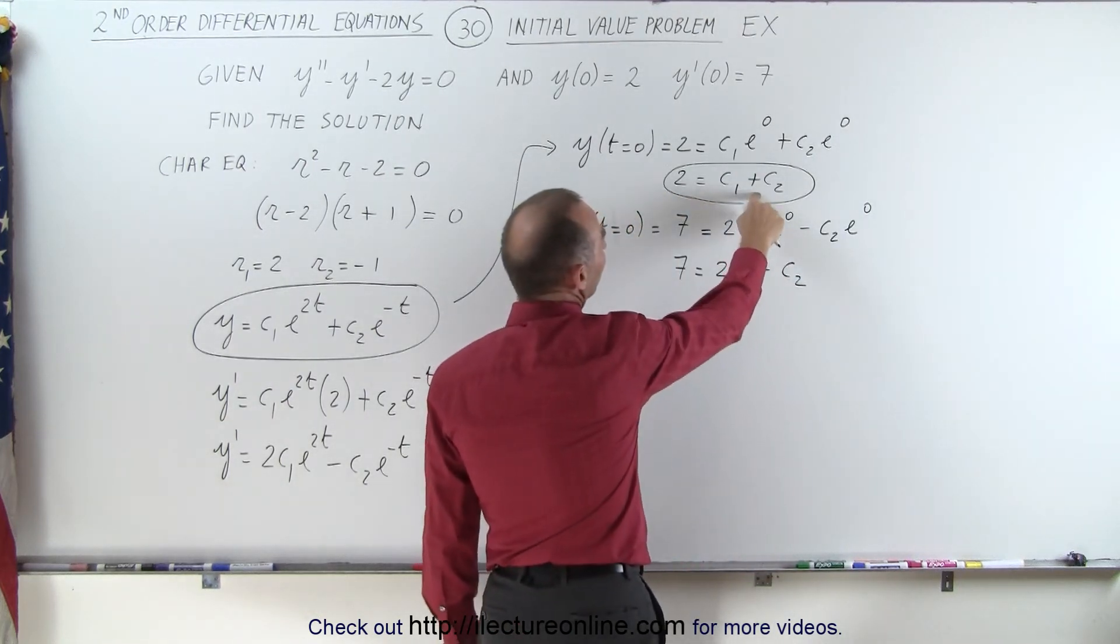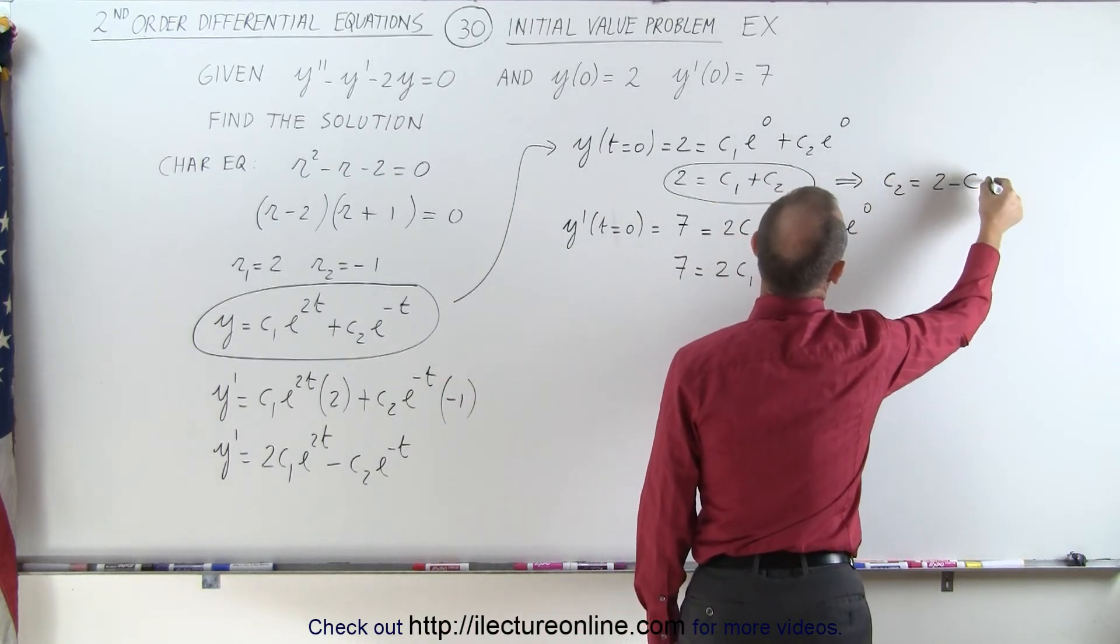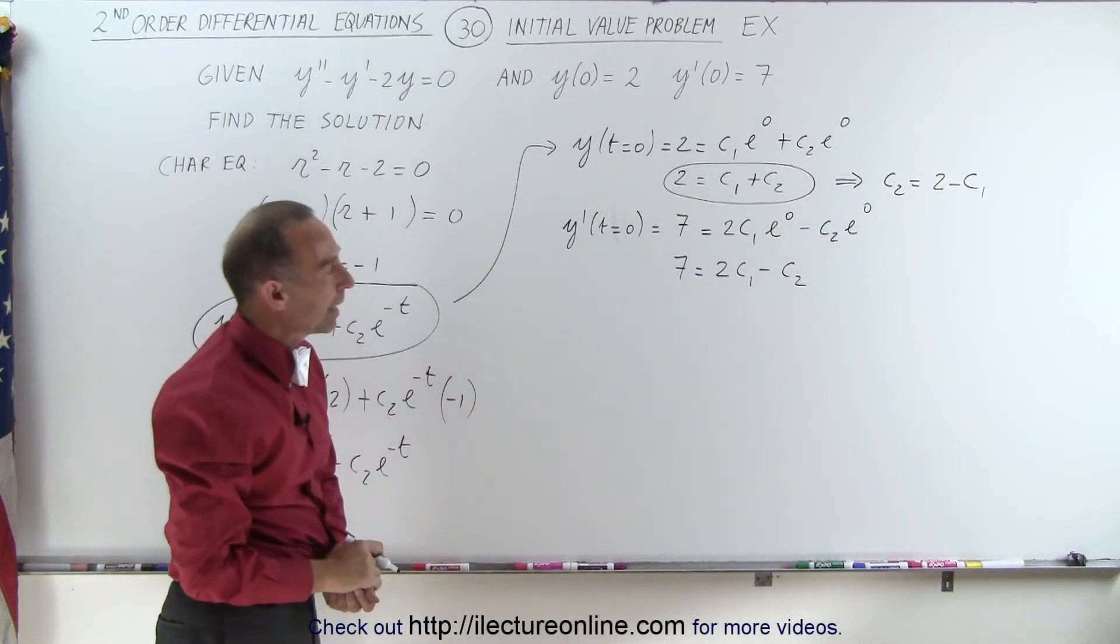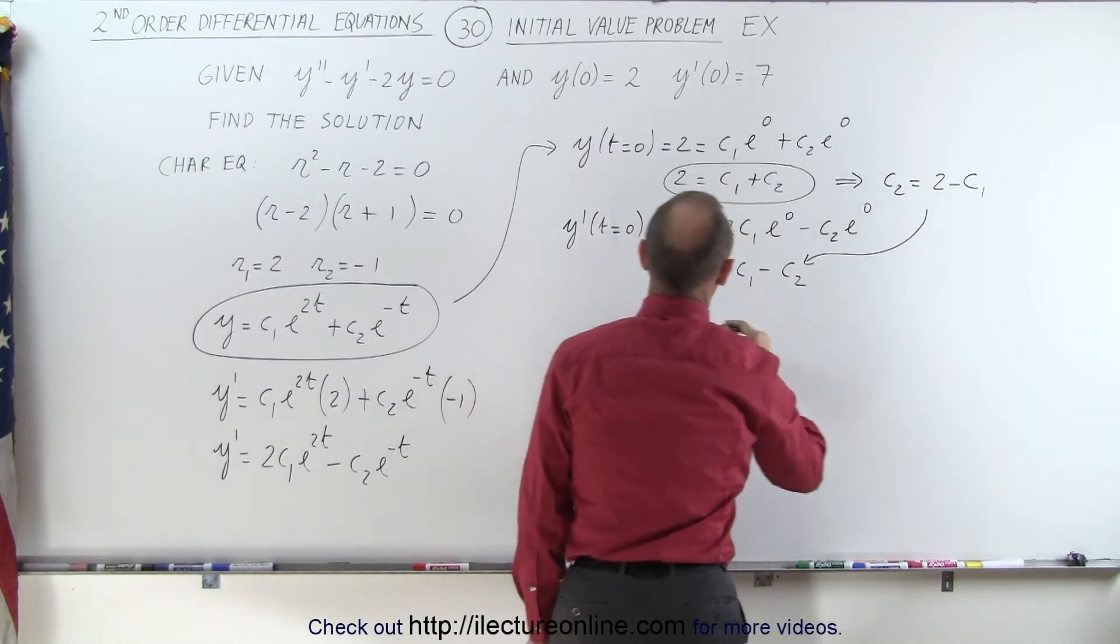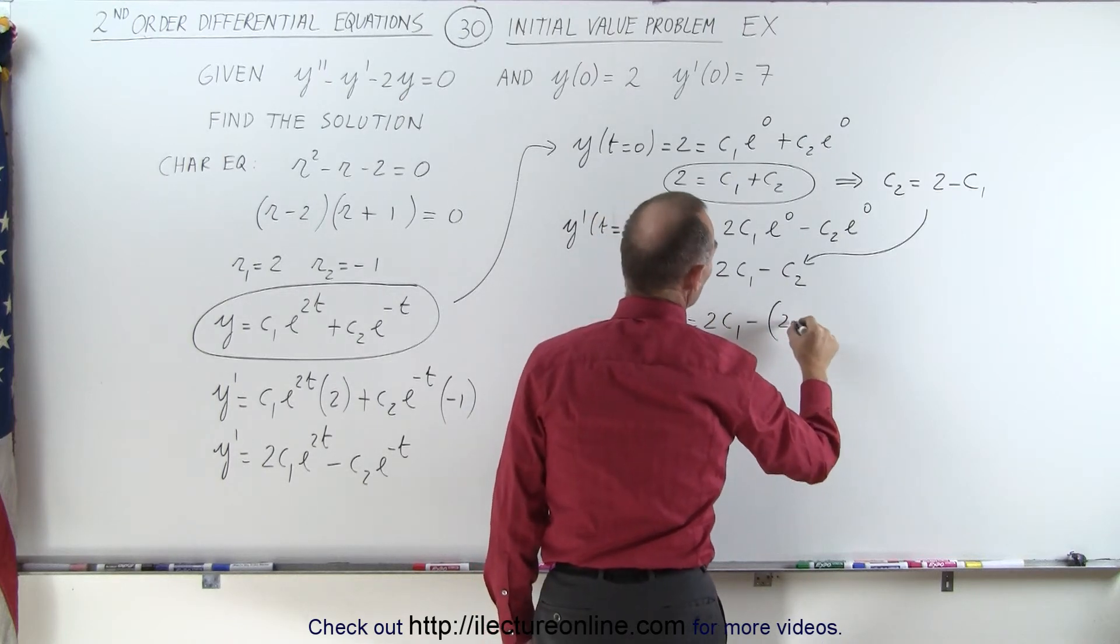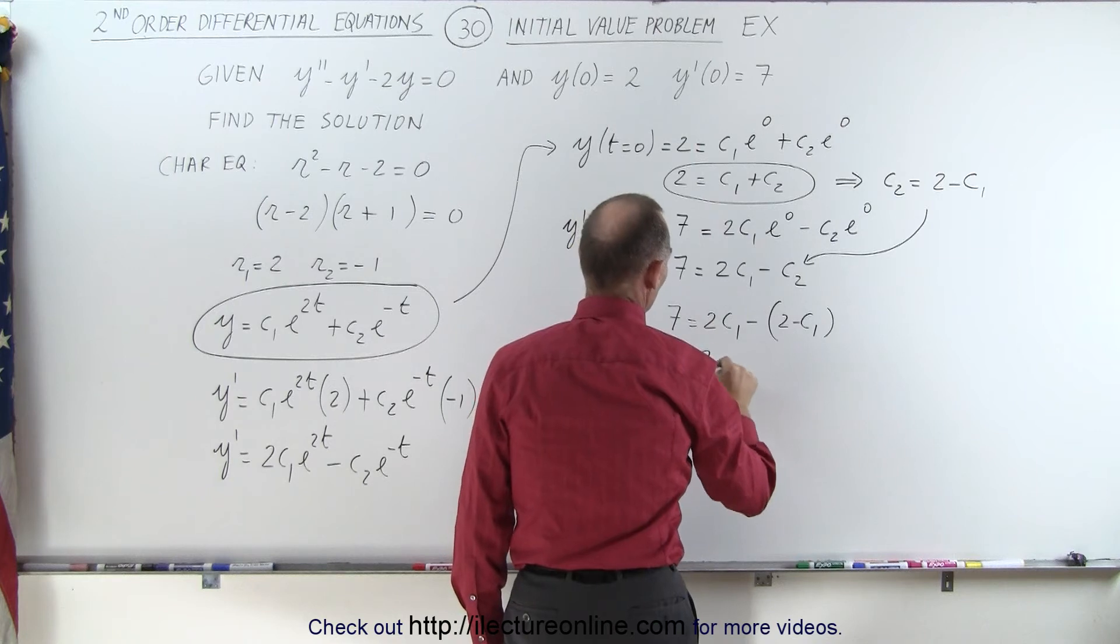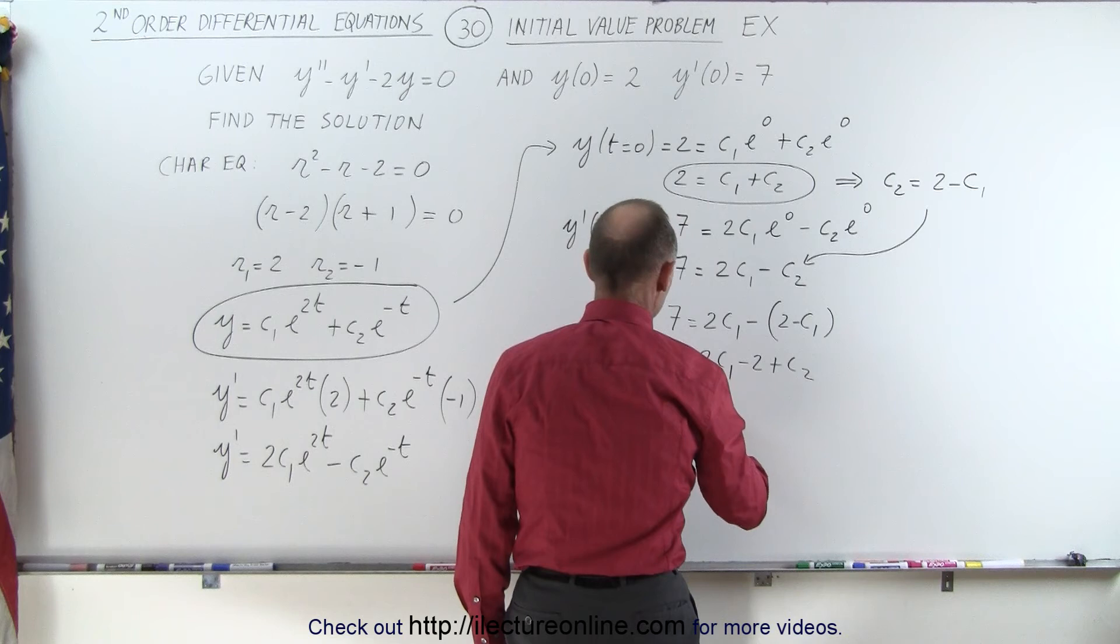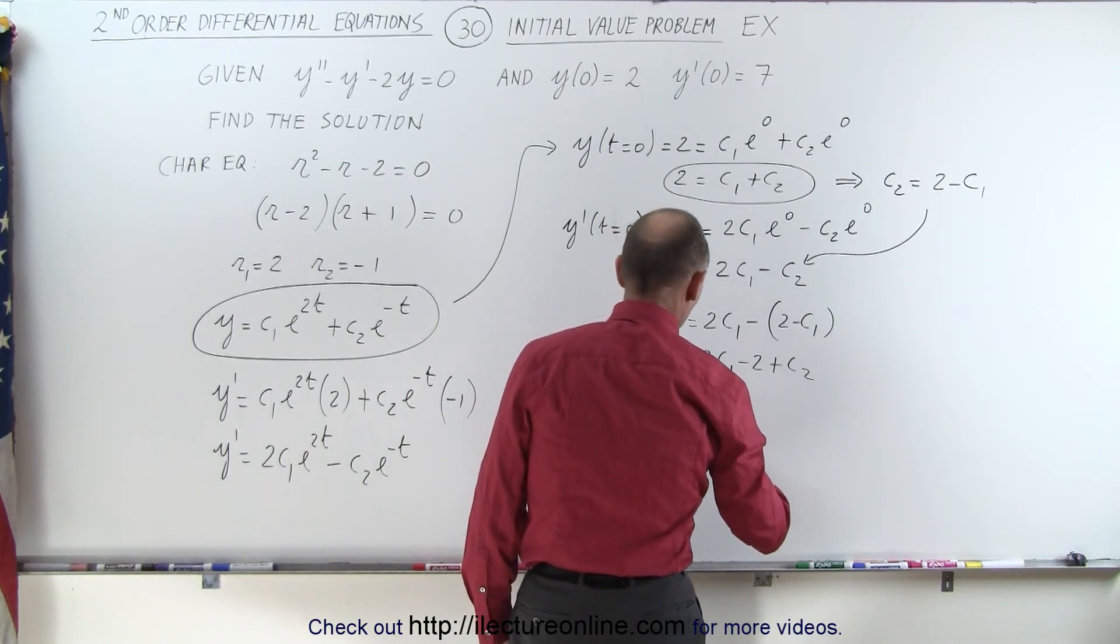But from this original equation, we can say that c2 is equal to 2 minus c1 by bringing c1 over to the other side of the equation, the equal sign. And we can plug that into our second equation. So this becomes 7 is equal to 2 c1 minus 2 minus c1, or 7 equals 2 c1 minus 2 plus c1. Bringing the 2 across, we get 9 is equal to 3 c1, or c1 is equal to 3.